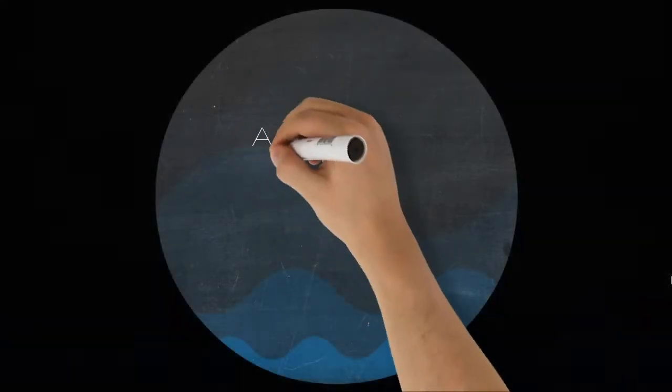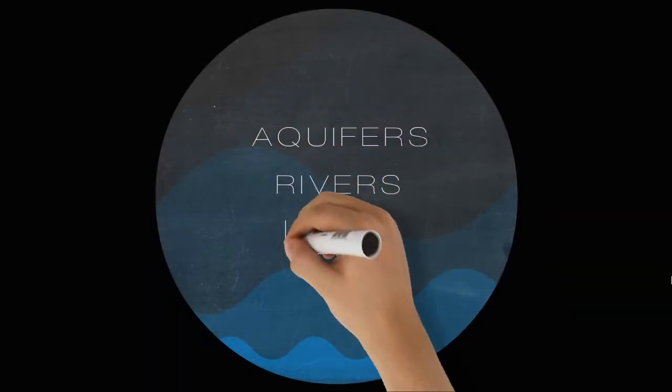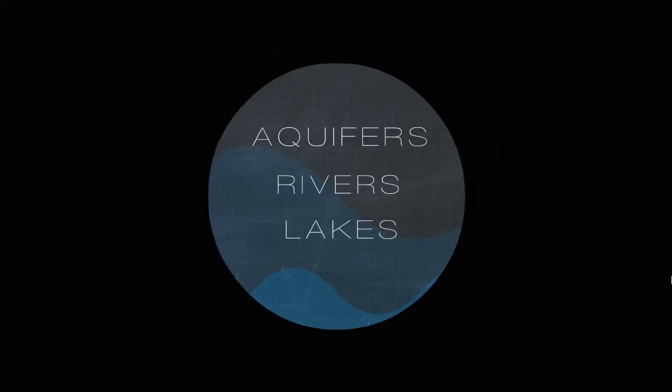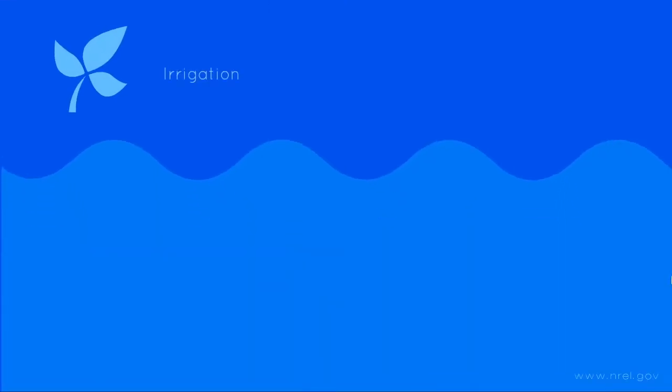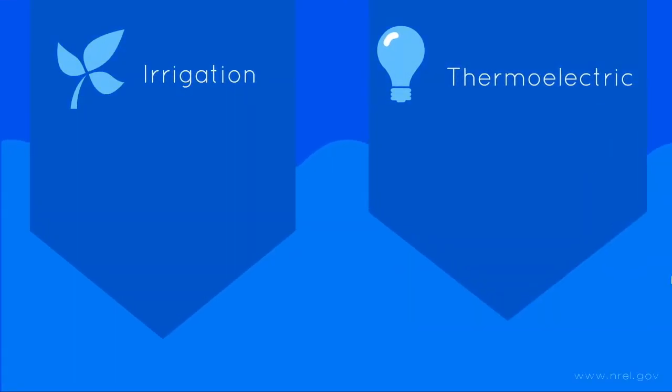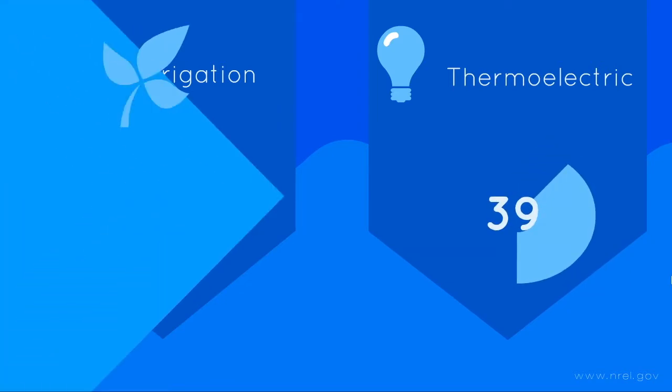People are now using more water. This leads to the depletion of aquifers, rivers, and lakes. Of all the water being used in the world, 41% is used for irrigation and 39% is being used for thermoelectric energy.